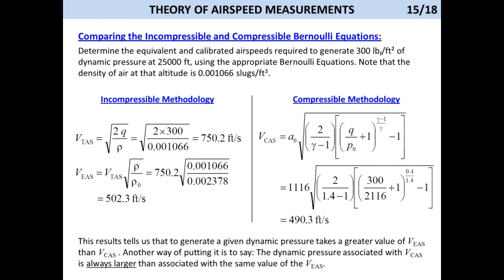The result tells us that to generate a given dynamic pressure takes a greater value of equivalent than calibrated airspeed. Another way of putting it is to say the dynamic pressure associated with the calibrated airspeed is always larger than associated with the same value of the equivalent airspeed. This fact is very important to the aircraft structural analyst. Air loads based on the calibrated airspeed appear greater than they really are. And that's an opportunity to not increase the airplane's empty weight unnecessarily. For this reason, all aircraft certification loads, as can be seen in the so-called VN diagram, assume equivalent airspeed.